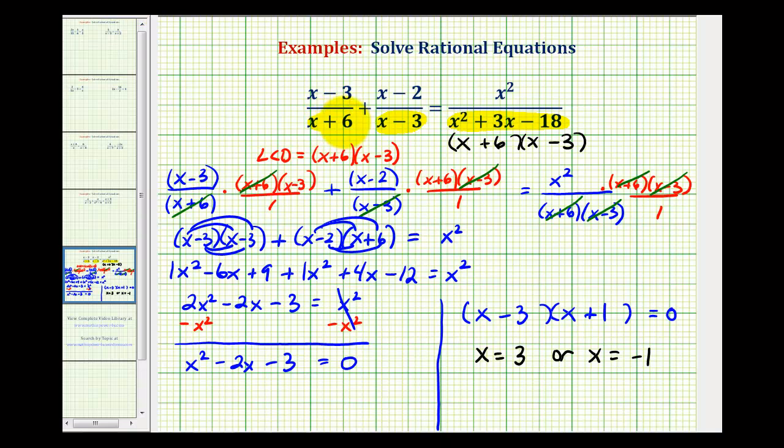Well notice if x is equal to negative six, it would make this denominator equal to zero as well as this one. So we must exclude negative six, but notice also positive three would make this denominator and this denominator equal to zero. So x also cannot equal positive three.